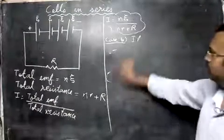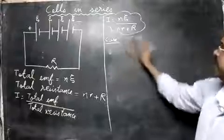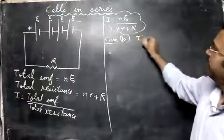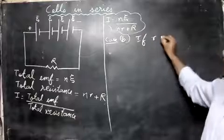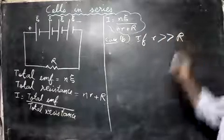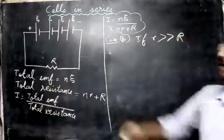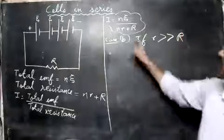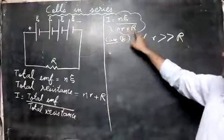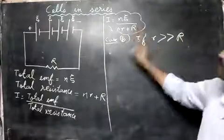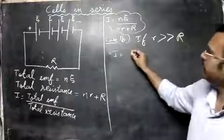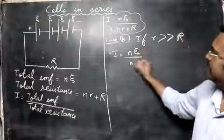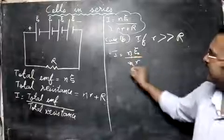Now let's go to Case B: the internal resistance is very much greater than the external resistance. Here, n·r is large and R is small, so we neglect the capital R term. The formula becomes I equals n·ε divided by n·r, and n cancels out.